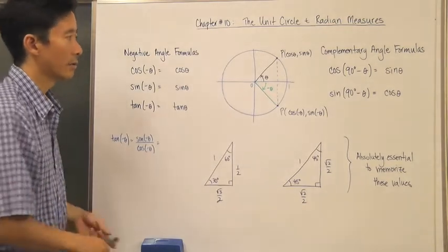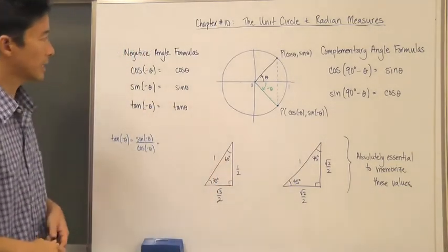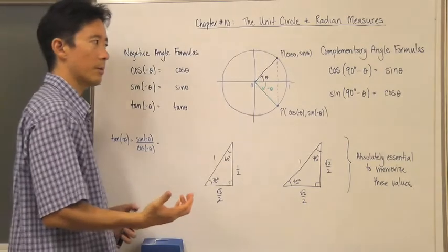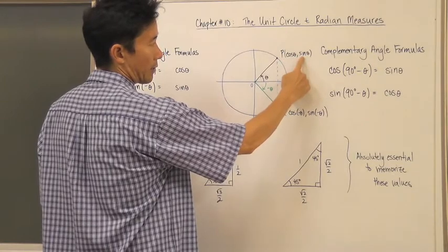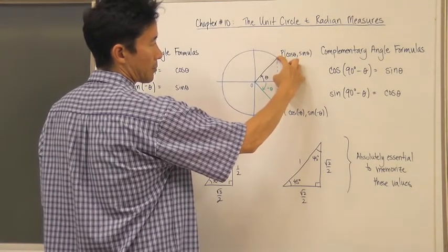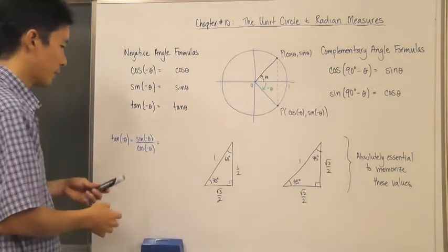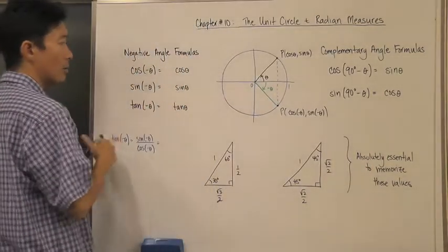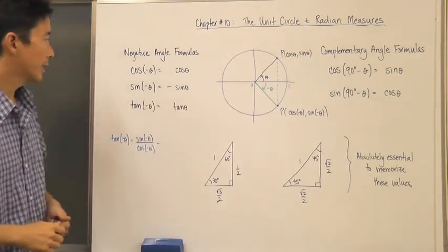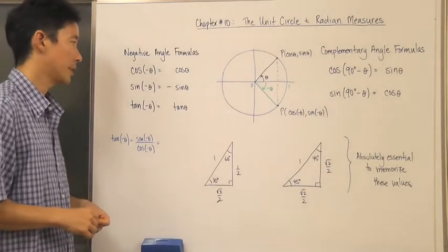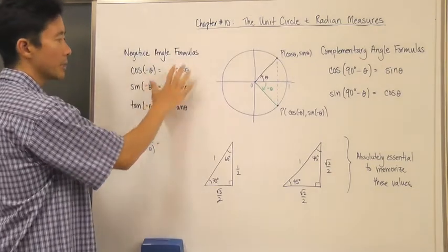Now let's look at sine of theta versus sine of negative theta. Remember we're dealing with the y-values. The y-value for sine of theta is positive, but for the negative angle in the fourth quadrant, that y-value is negative. So they are not equal as-is, but we can say that sine of negative theta equals negative sine of theta.